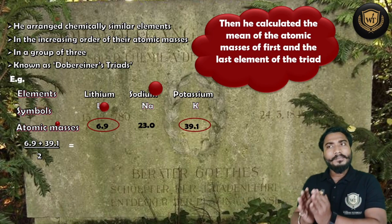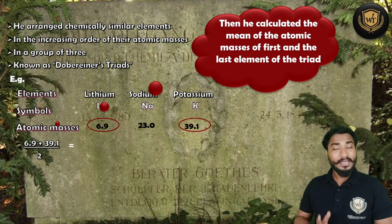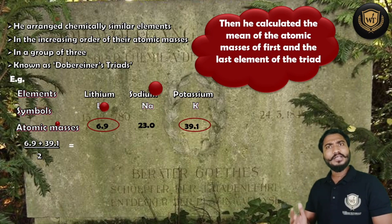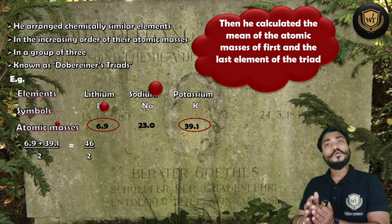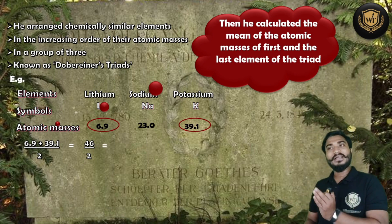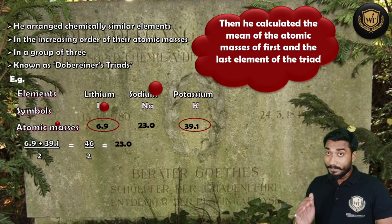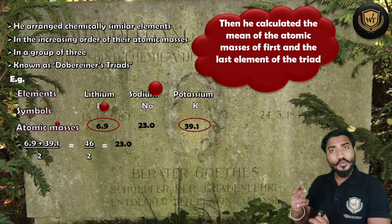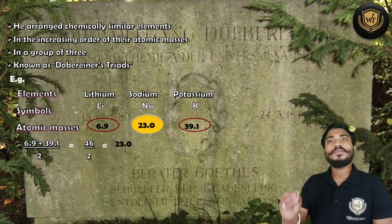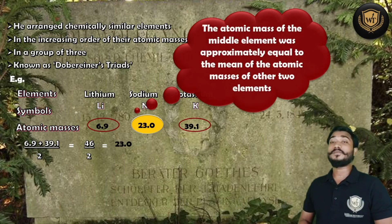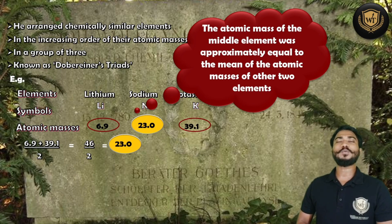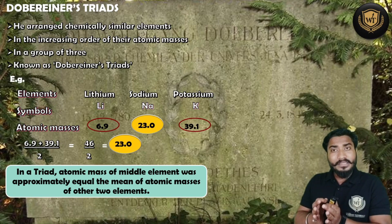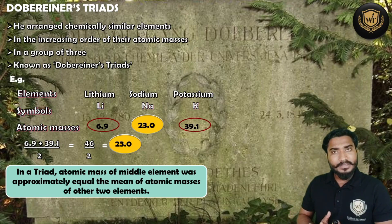For example: mass of the first element is 6.9, mass of the last element is 39.1. The average of these two numbers is 46, and 46 divided by 2 gives 23 — which is equal to the mass of the middle element, sodium. By this observation he gave a very famous law termed as Dobereiner's Law of Triads. The law states that in a triad — a group of three chemically similar elements — the mass of the middle element is approximately equal to the mean of the masses of the other two elements.